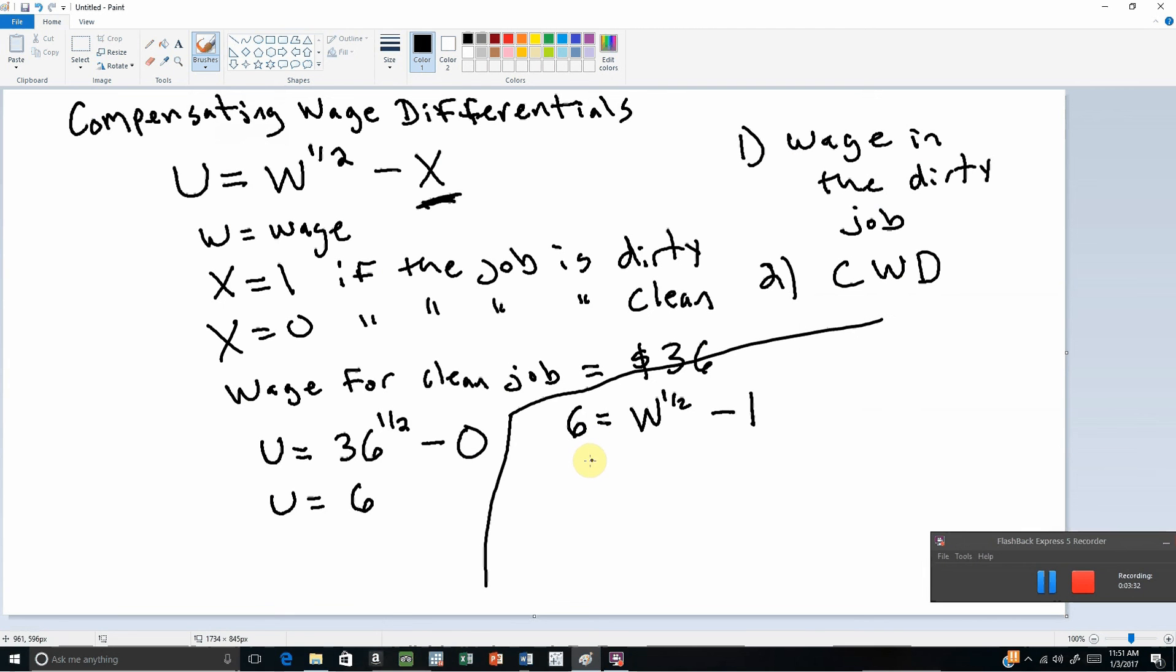Workers should be indifferent between working in a clean job at a wage of $36 or in a dirty job with some wage that we're trying to solve for. So in equilibrium, workers should get the same level of utility.